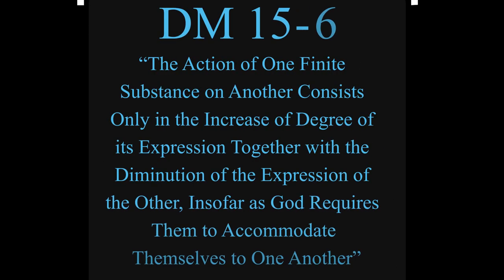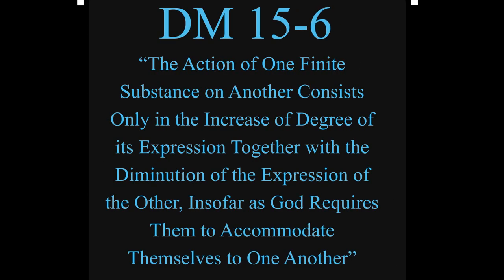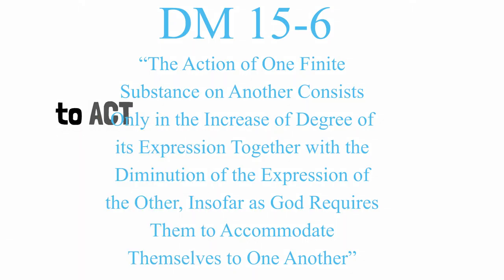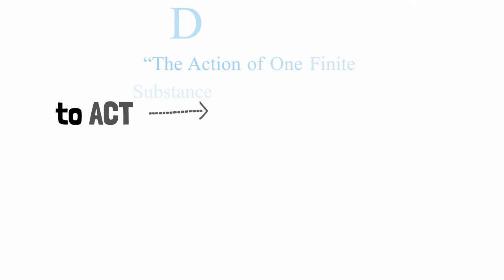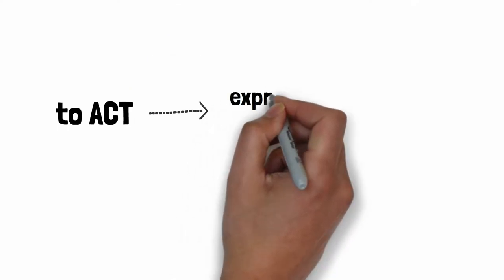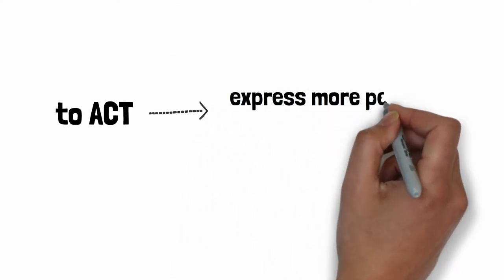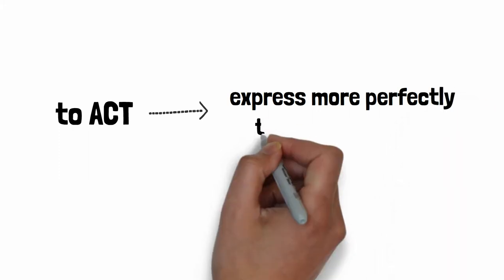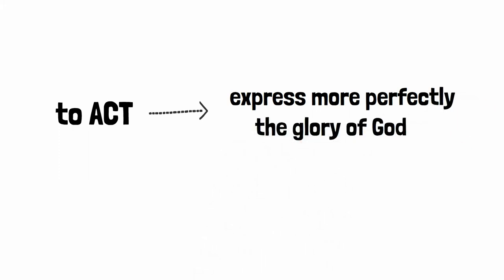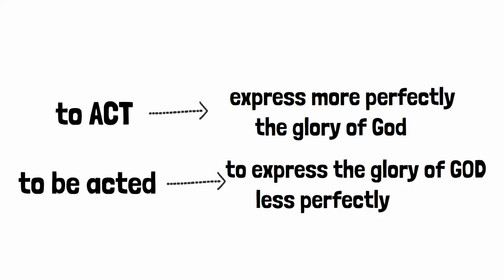Here the degree of expression is apparently equated with a degree of perfection. To act and increase one's expression is also to acquire a higher degree of perfection. This is all connected to expression of one particular thing, the glory of God. So to act is, it appears, to express more perfectly the glory of God, and to be acted upon is to express it less perfectly.